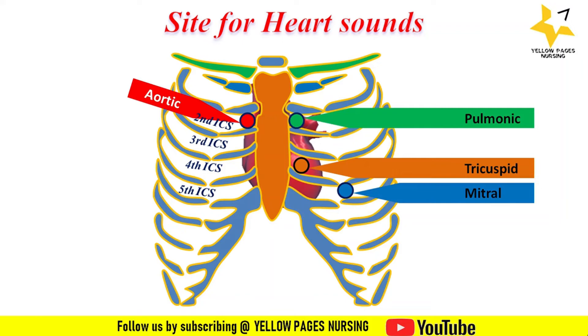Another important auscultation point is Erb's point, which is found at the third left intercostal space along the left sternal border, between the pulmonic and tricuspid areas.